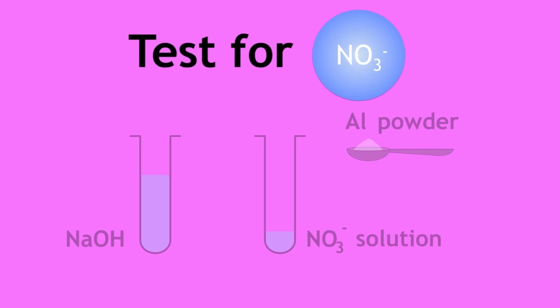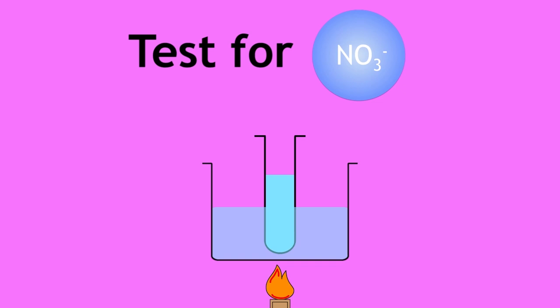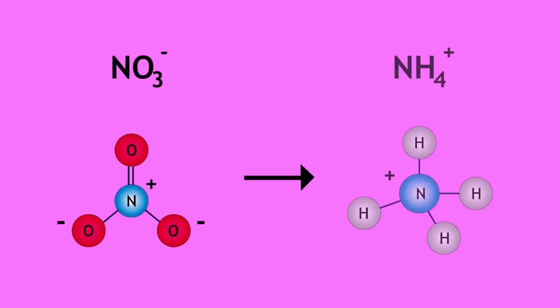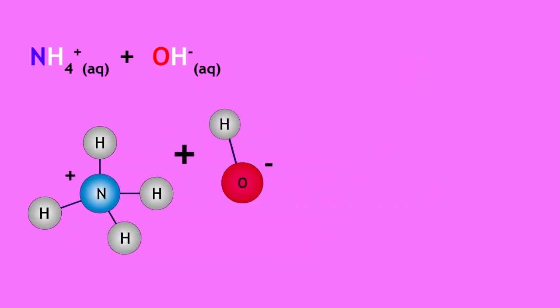To test for nitrates, add sodium hydroxide and aluminum powder and heat gently in a warm water bath. Aluminum powder reduces the nitrate ion to an ammonium ion. The ammonium ion then reacts with hydroxide to release ammonia.